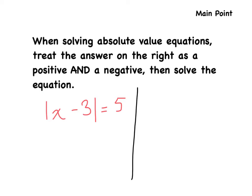We just worked on expressions. Now we're moving into equations. This is one of the main points: when solving absolute value equations, treat the answer on the right as both a positive and a negative, then solve the equation. For example, we have the absolute value of x minus 3 is equal to 5.